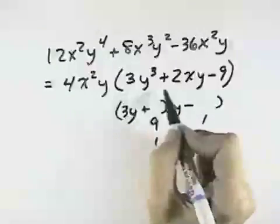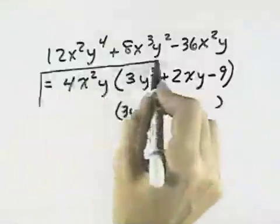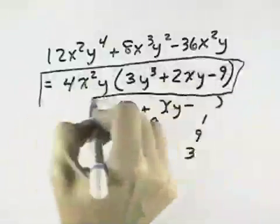So that means this trinomial cannot be factored, so that this would be the final factored form for this polynomial.